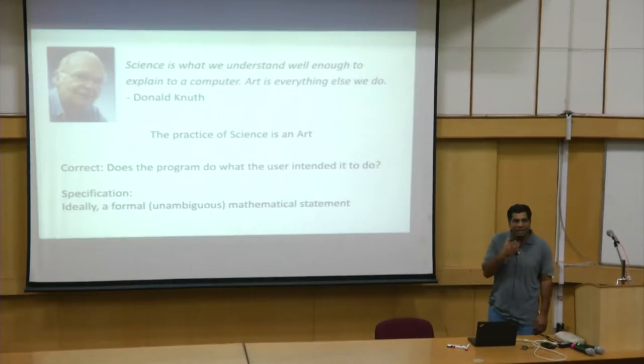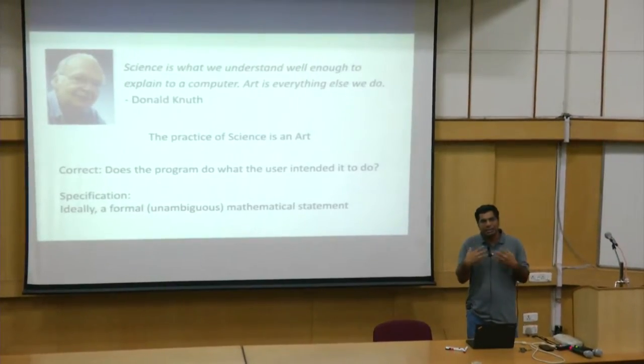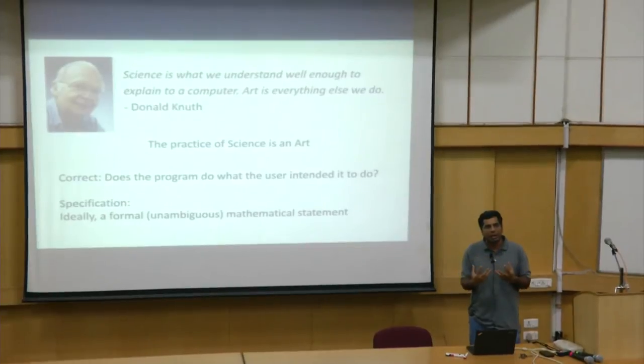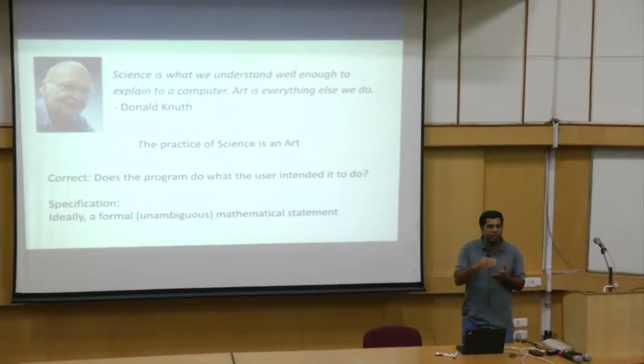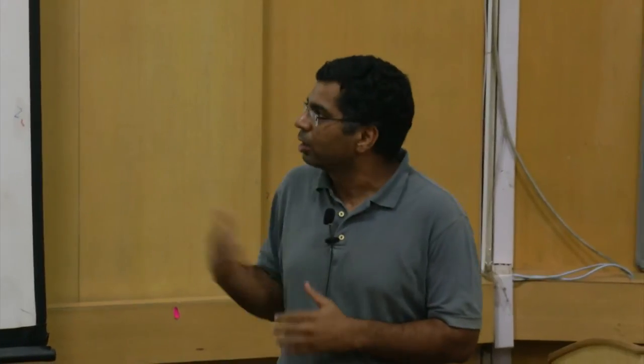Science tells you the principles: if you do this, this will happen — science gives you a deterministic answer. In any situation you make a difference, what will be the resulting state. But what intervention to make — that is an art. You have many choices at any point, each of which you understand scientifically well enough. But which particular choice to make, which particular series of interventions to take — that is an art. In that sense, the practice of all science is an art.